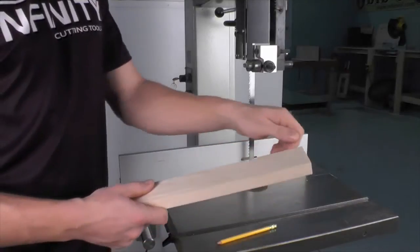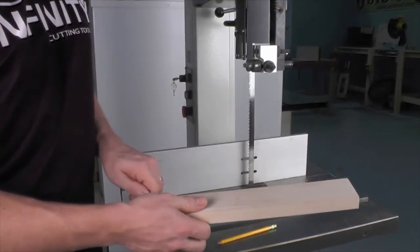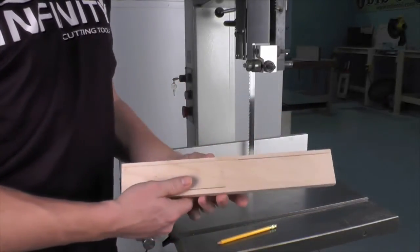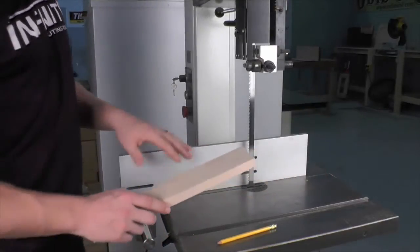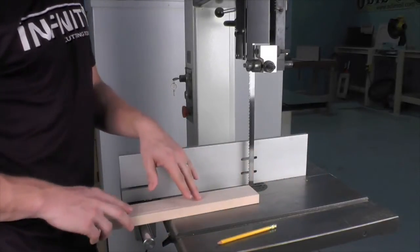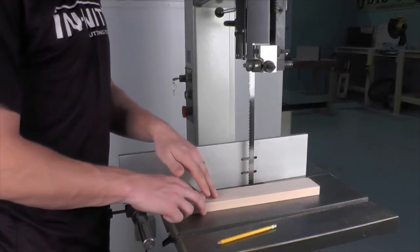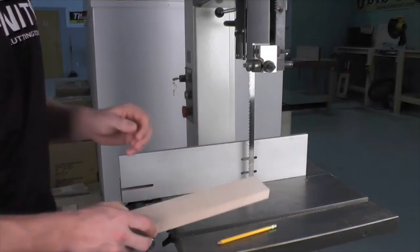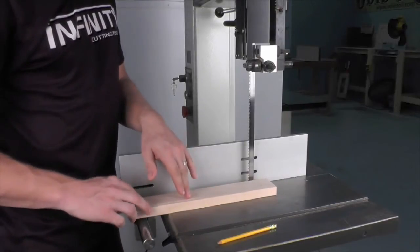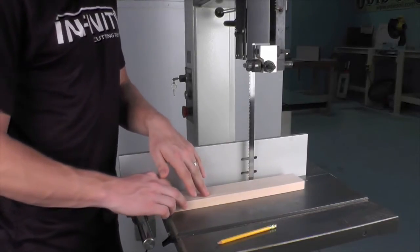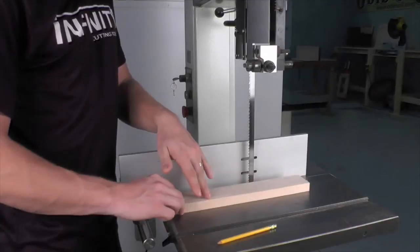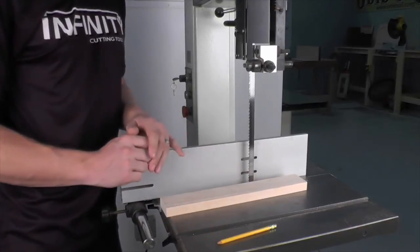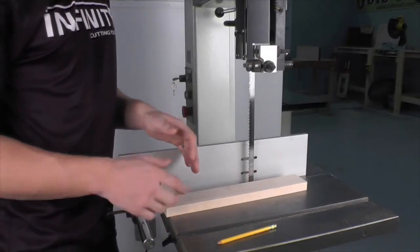Then I take a marking gauge and simply mark a parallel line on the face of this piece of scrap. With the fence out of the way, I would feed the block into the blade, trying to follow my scribed line as closely as possible. Once I can feed that block into the blade without making any adjustments and it follows my line perfectly for about three to four inches.